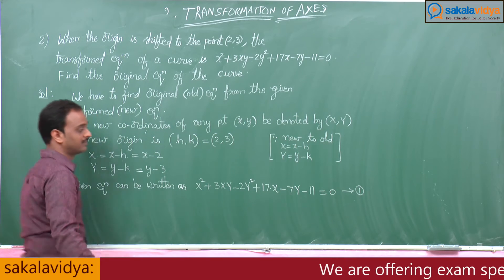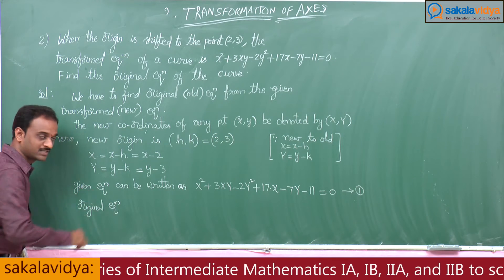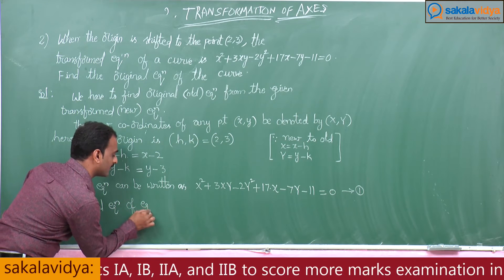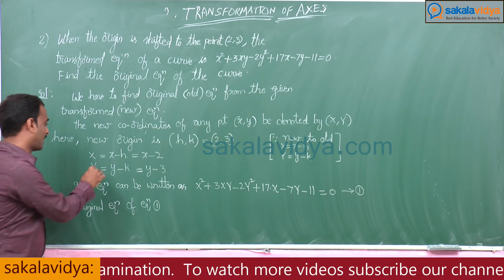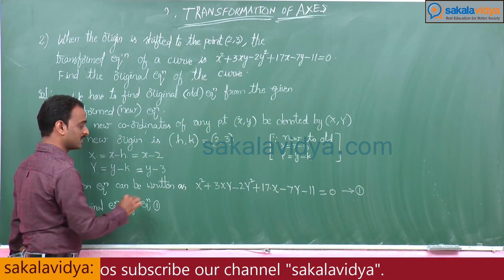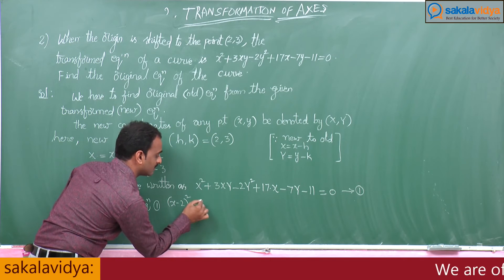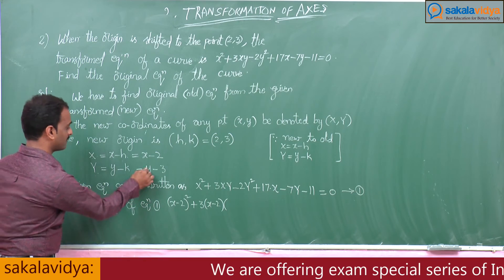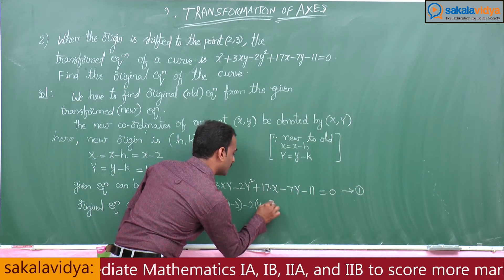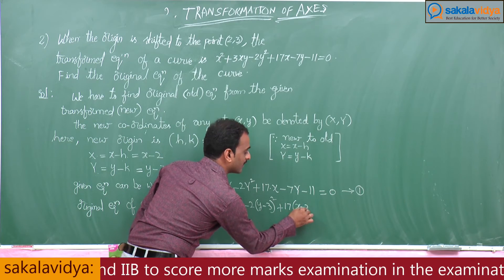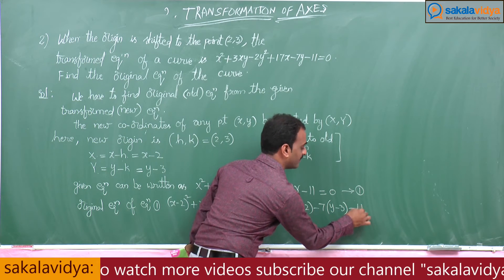To find the original equation of equation number 1, we substitute capital X = x − 2 and capital Y = y − 3. This gives: (x−2)² + 3(x−2)(y−3) − 2(y−3)² + 17(x−2) − 7(y−3) − 11 = 0.